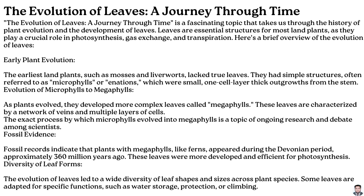Here is a brief overview of the evolution of leaves. Early plant evolution: the earliest land plants, such as mosses and liverworts, lacked true leaves. They had simple structures, often referred to as microphylls, which were small, one-cell-layer-thick outgrowths from the stem.